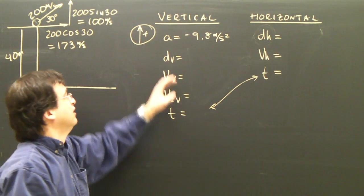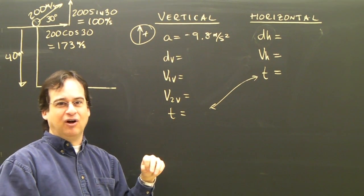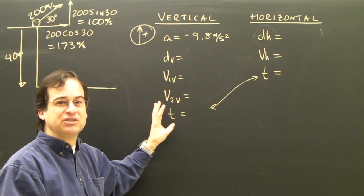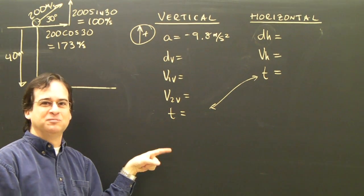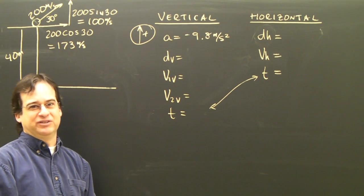As I did before, I've got my vertical column, which is the acceleration column. And I have five variables in that, and I need three of them to solve for anything in this column. And I use the big five equations.